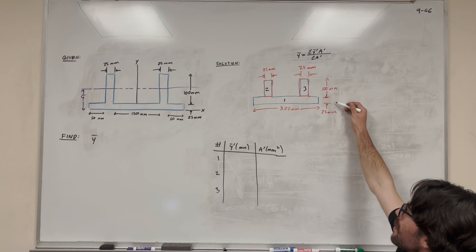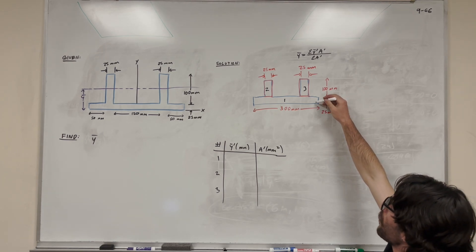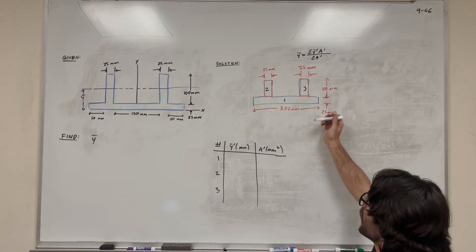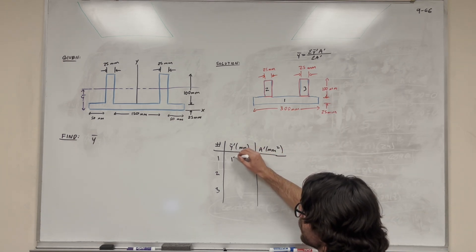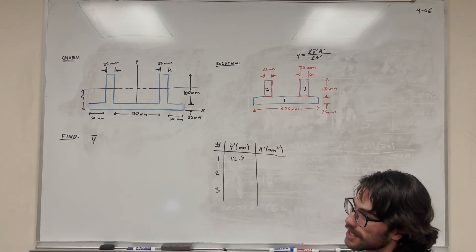This is going to be really easy because for rectangles, this first one is y bar, so it's the height to the center of mass from the height. So if it's 25 millimeters tall, it's going to be that divided by two, so 12.5 is its height.